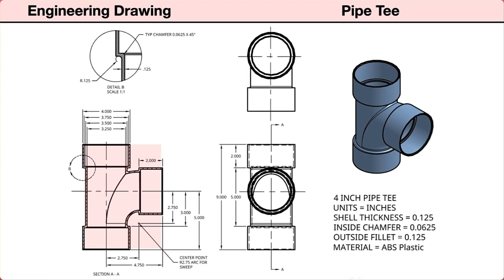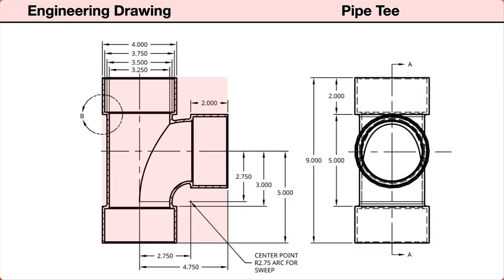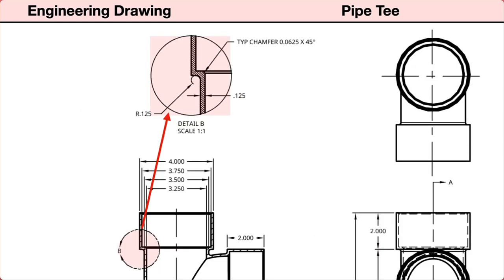On the bottom left is a front section view. Projected and aligned to the right of the front view is a right side view. Projected and aligned above the right side view is a top view. The front view is shown as a section view. This makes visible the interior features, the wall thickness, and the transitions between the outer flanges and the pipe. The cutting plane line in the right view shows the location and direction of the section view.